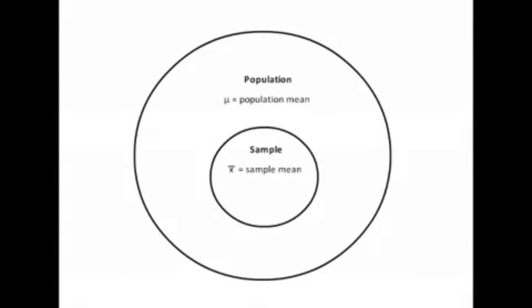Now look at what you've learned. We have a population, and the population has a mean represented by the Greek letter mu. The sample is part of the population, and the sample also has a mean represented by X-bar. Mu, the population mean, and X-bar, the sample mean, are called descriptive statistics because they describe conditions of the population or conditions of the sample. You need to know that the Greek letter mu stands for the mean of the population, X-bar stands for the mean of the sample, and the phrase mean refers to the numerical average.